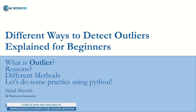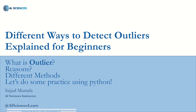Today our topic is different ways to detect outliers. In this video, we'll be detecting the outliers. In the upcoming video, we will be finding different ways to eliminate outliers. So first of all, we'll try to learn what an outlier is, then we'll see why outliers come into our data, then we will see different methods on how we can detect outliers, and finally we'll be doing some hands-on practice in Python.